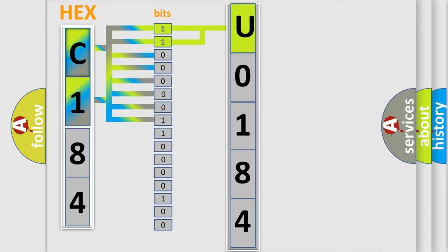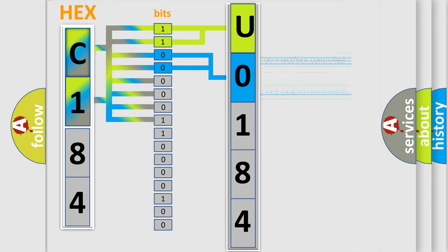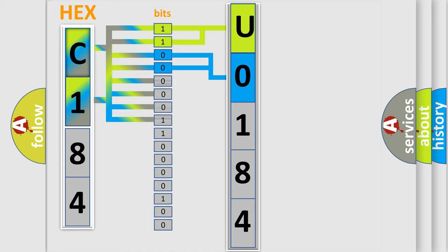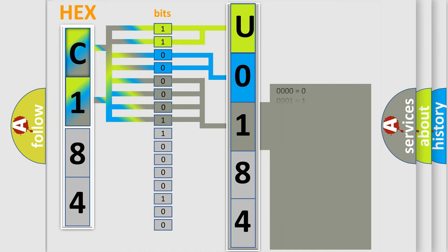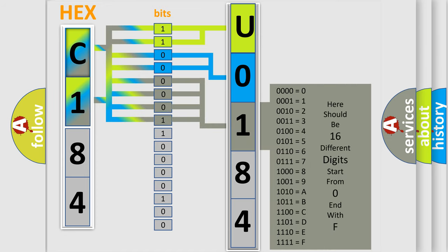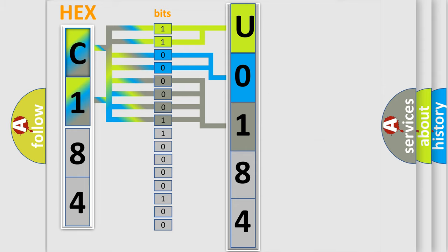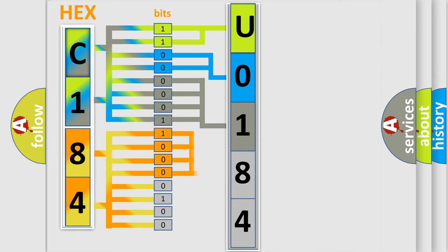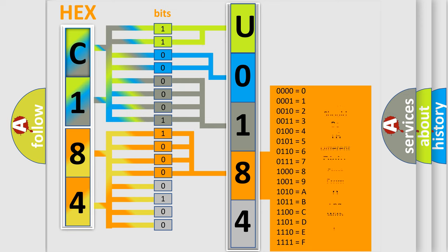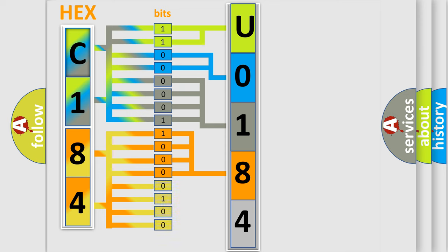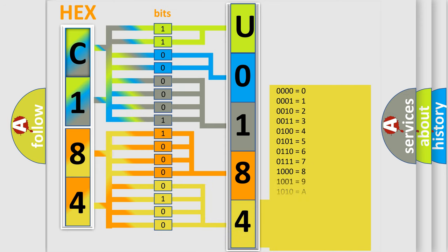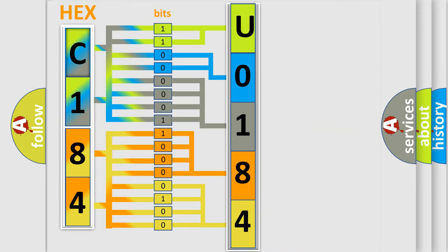The next two bits determine the second character. The last four bits of the first byte define the third character of the code. The second byte is composed of a combination of eight bits. The first four bits determine the fourth character of the code, and the combination of the last four bits defines the fifth character. A single byte conceals 256 possible combinations.